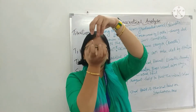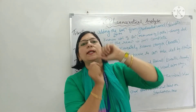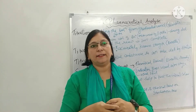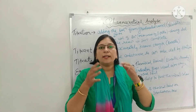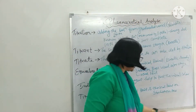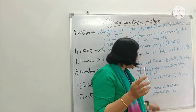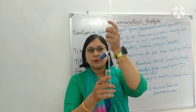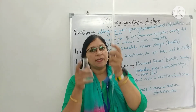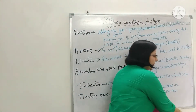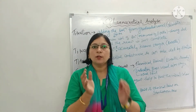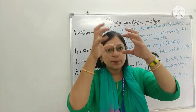जब हमने burette से conical flask में solution को add किया है, और जब तक reaction complete नहीं हो जाती, तब तक हमको उसको titrate करना है। Burette से जब हम drop-by-drop solution add करेंगे this conical flask में, और indicator जब add करेंगे तो color change होगा in the conical glass — तो हमको बता चलेगा reaction complete हो गई है। इस पूरी process को titration कहते हैं।